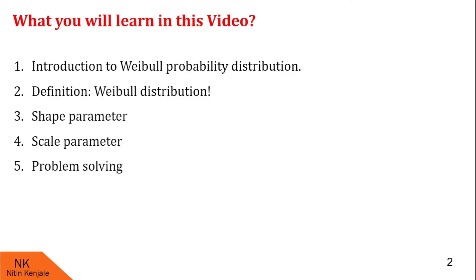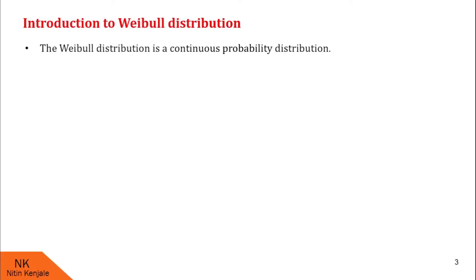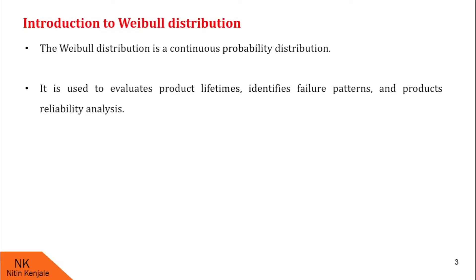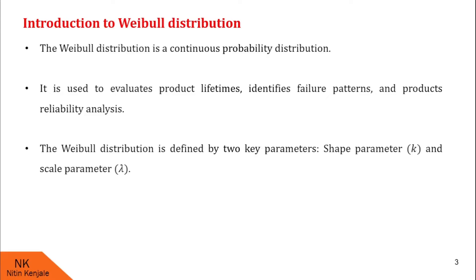Now let us proceed with the first point: introduction to Weibull distribution. Weibull distribution is a continuous probability distribution. It is used to evaluate a product's lifetime, identify failure patterns, and perform product reliability analysis. The Weibull distribution is defined by two key parameters: one is called the shape parameter, denoted by k, and another is called the scale parameter, denoted by lambda. Now let us study these two parameters in detail.